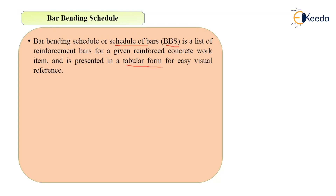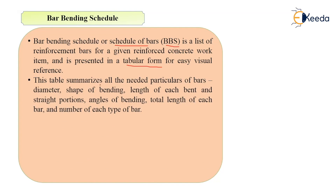We prepare this in a tabular form for easy visual reference, and this table summarizes all the needed particulars of bars: diameter, shape of bend, what type of bend it is, length of each bend and straight portions, angle of bending, total length of each bar, and number of each type of bar. All this data is explained in the bar bending schedule.